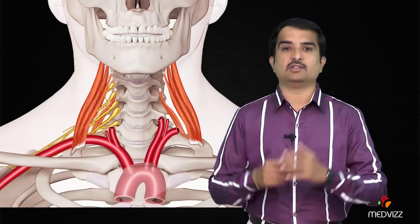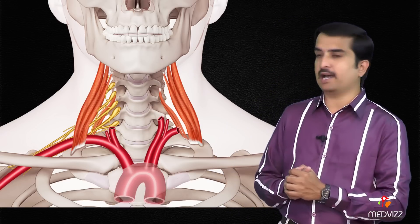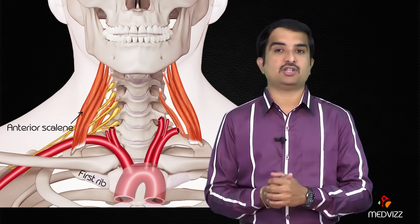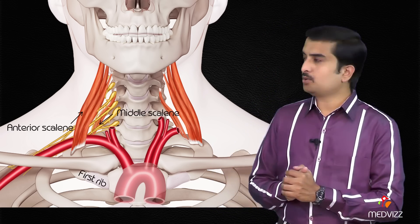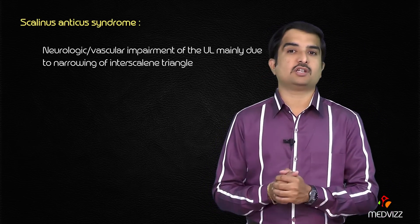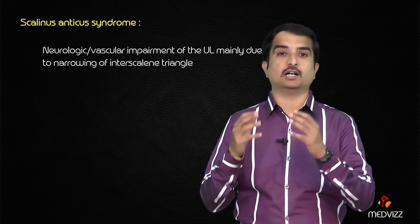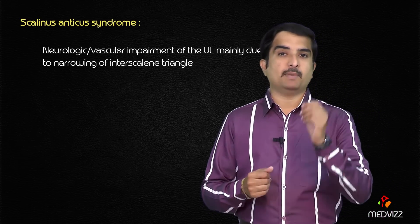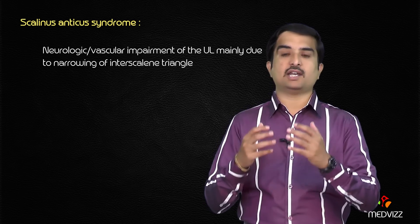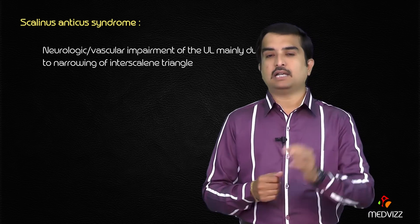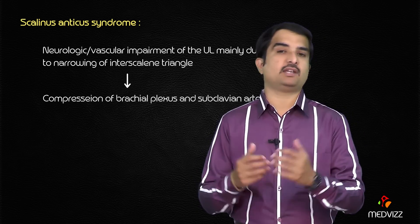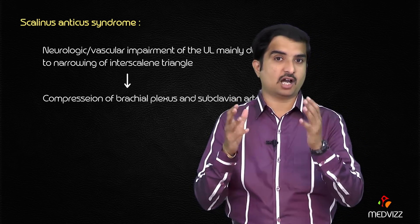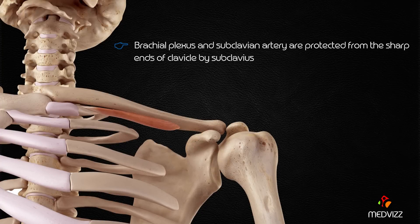The interscalene triangle is mainly formed by the first rib, scalenes anterior, and scalenes medius. Scalene anticus syndrome is a neurologic or vascular impairment of the upper limb, mainly due to the narrowing of the interscalene triangle and subsequent compression of the brachial plexus as well as the subclavian artery.